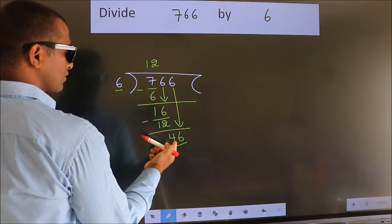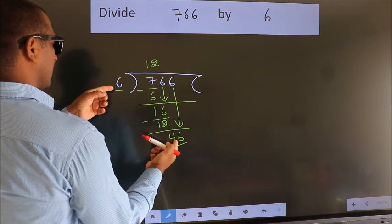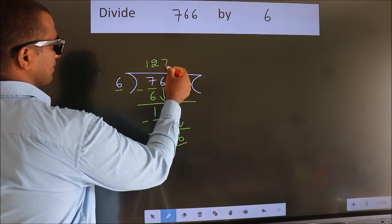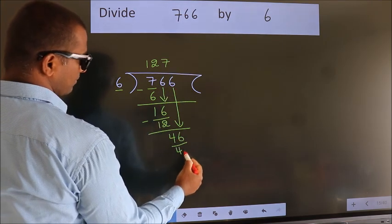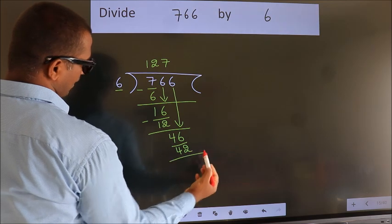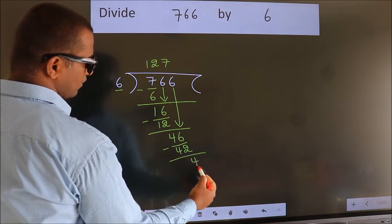A number close to 46 in 6 table is 6 sevens, 42. Now we subtract. We get 4.